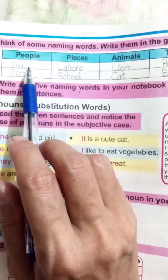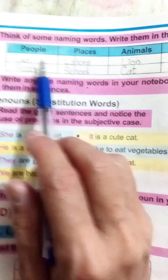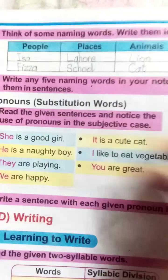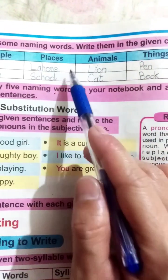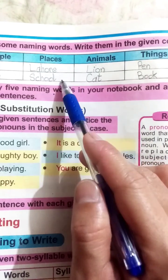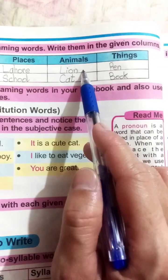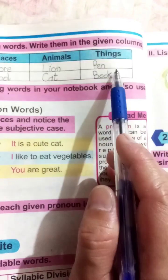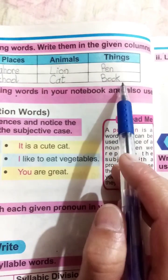People mein hum koi bhi naam mention kar sakte hain. For example: Isa, Fiza. Places - kisi jaga ka naam likhayenge, for example: Lahore, school. Animals means janver - for example: lion, cat. Things means cheezon ke naam likhayenge - for example: pen, book.